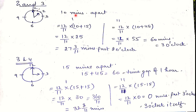Between 2 and 3 o'clock the time gap is 10 minutes, so again we add 15 as well as 45. The first point is 27 and 3/11 minutes past 2 o'clock. For the second point: 10 plus 45 equals 55, and multiplying 12/11 into 55 gives 60 minutes past 2 o'clock, which becomes 3 o'clock itself. So between 2 and 3, one right-angle point occurs at 27 and 3/11 minutes, while the other falls exactly at 3 o'clock.